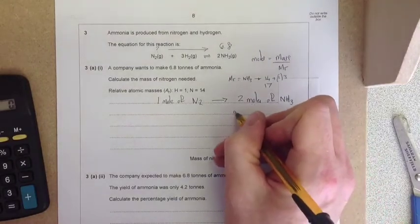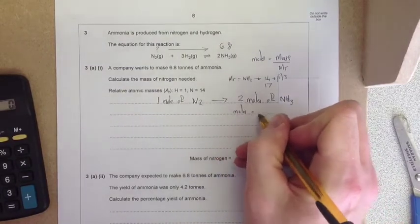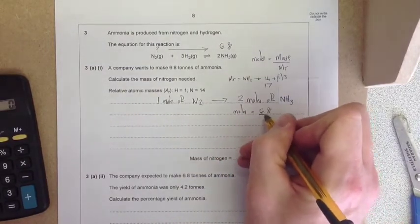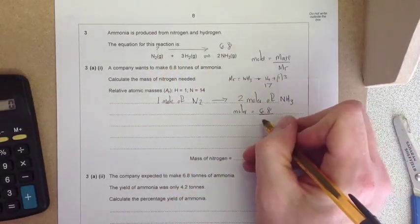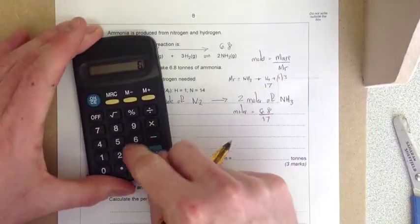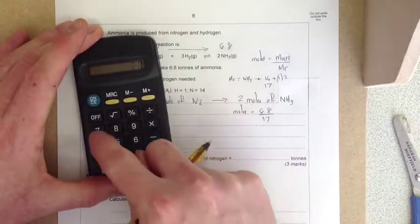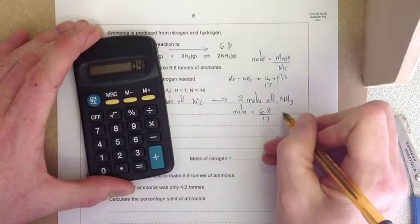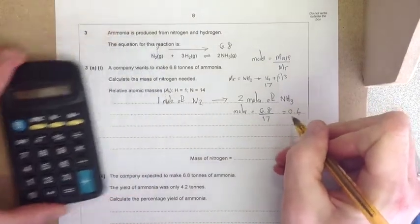Therefore, the number of moles of ammonia is 6.8 divided by 17, which equals 0.4. So we've got 0.4 moles.